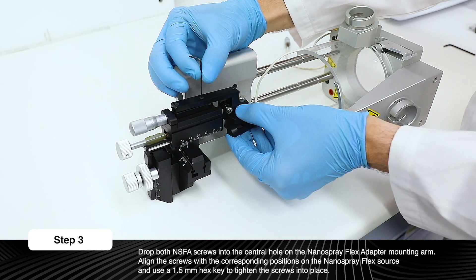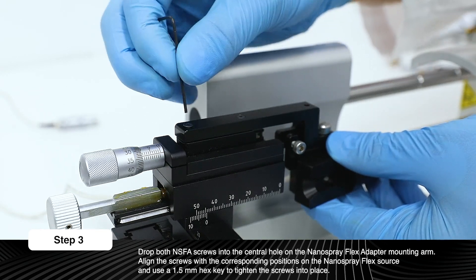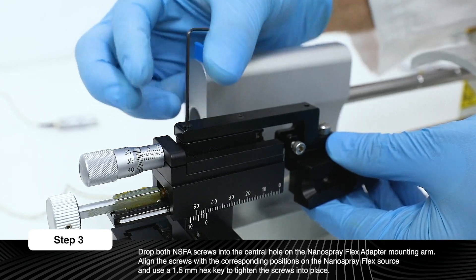Align the screws with the corresponding positions on the Nanospray Flex Source and use a 1.5mm hex key to tighten the screws into place.